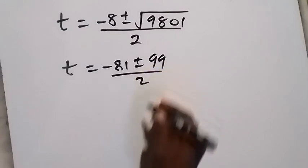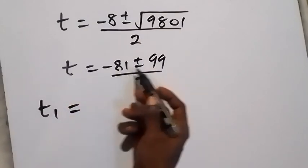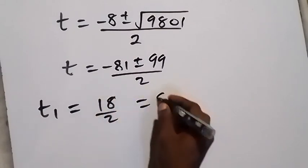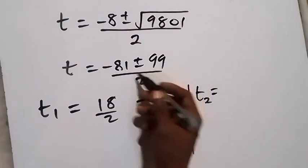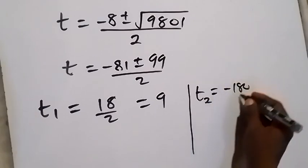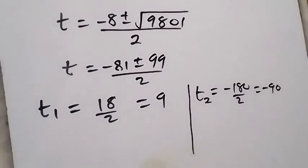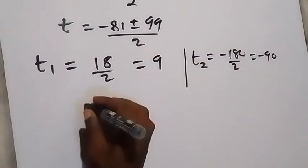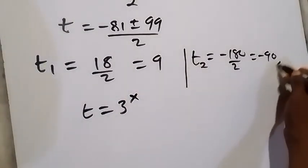The square root of 9801 gives us 99. Separating into two values: t1 equals minus 81 plus 99, which is 18 over 2, giving 9. And t2 equals minus 81 minus 99, which is minus 180 divided by 2, equaling minus 90. Since t represents 3 raised to power x — which is always positive — the negative value t2 has no solution.